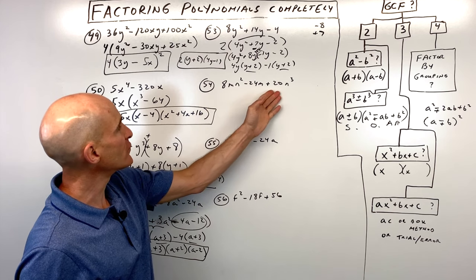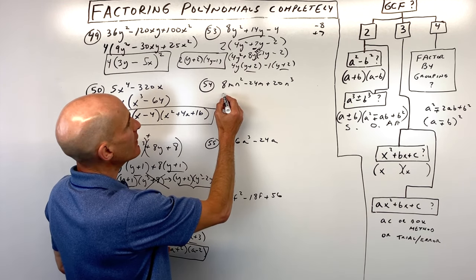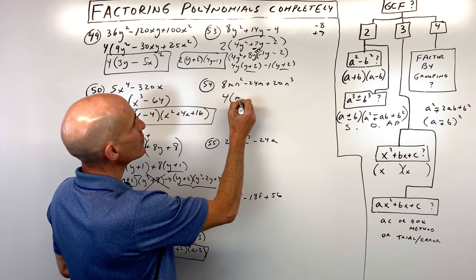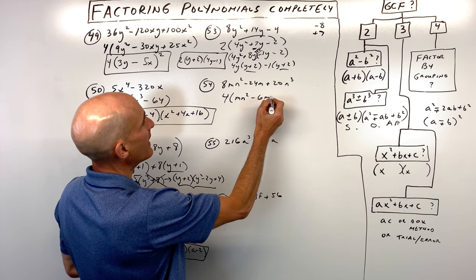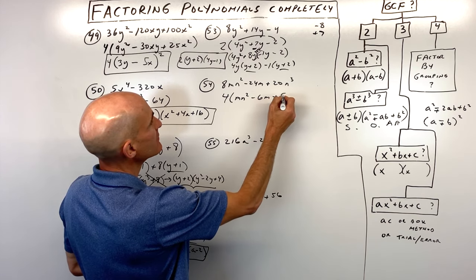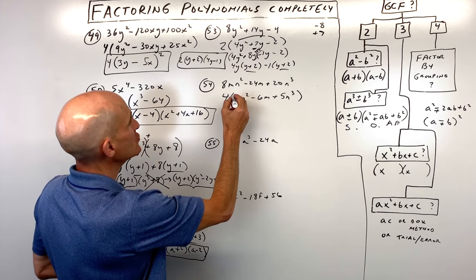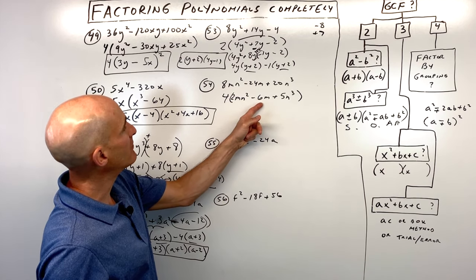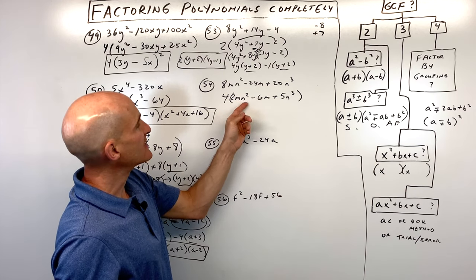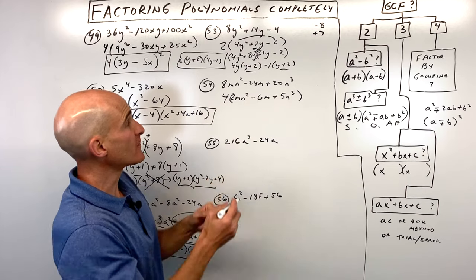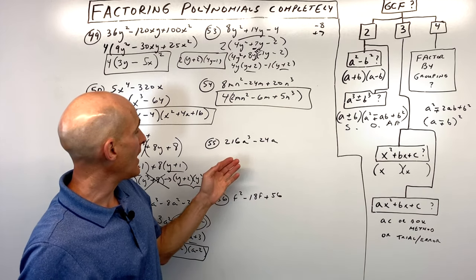Number fifty-four has a greatest common factor of 4. Factoring that out gives 4 times 2mn squared minus 6m plus 5n cubed. This trinomial can't be factored any further, so it was just the greatest common factor.